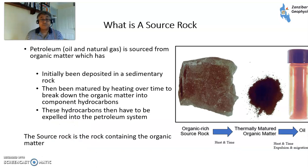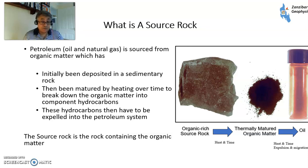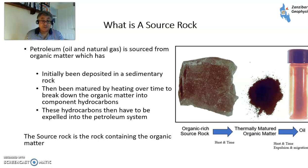So what is a source rock? Petroleum, oil and natural gas source from organic matter. Organic matter has been initially deposited in a sedimentary rock. It's then been matured by heating over time, which breaks the organic matter down into its component hydrocarbons — effectively cooking. These hydrocarbons then have to be expelled into the petroleum system. They eventually will get trapped to form oil fields, but most of them will escape. So source rock: rock containing the organic matter.